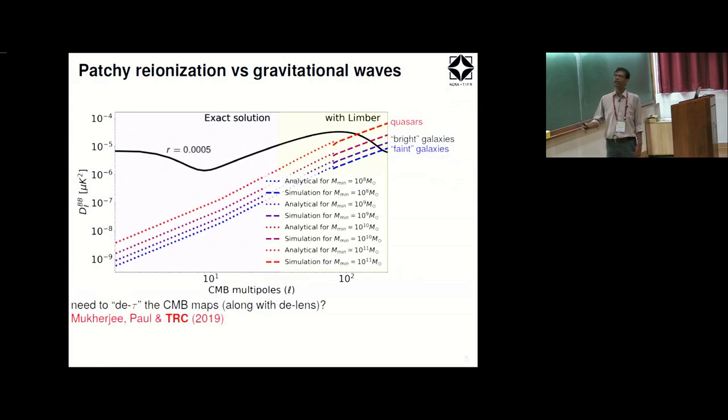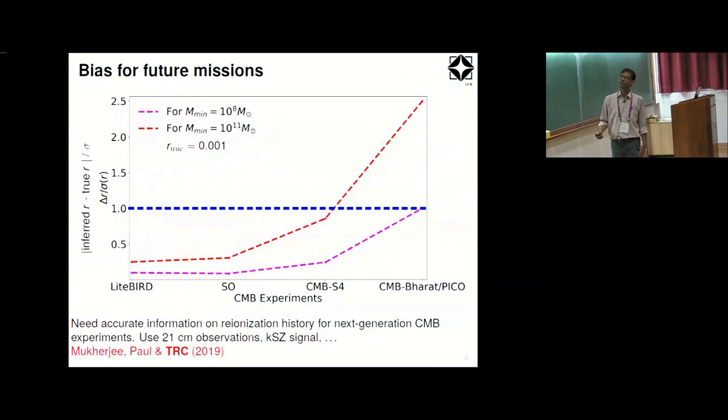But what you should also realize is that this optical depth along different lines of sight could be different because reionization is not a homogeneous process, it's patchy. So there's fluctuations in these white regions. That gives rise to a B-mode signal and that is something we have been trying to calculate. What we have come up with is a very self-consistent and detailed model of reionization. Given this uncertainty this is the kind of B-mode signal you expect from the reionization, this scattering of free electrons which is still much reasonably smaller than the primordial B-mode signal. But what can happen is if you want to calculate the bias it will incur in the measured or inferred value of the tensor to scalar ratio R, which is a probe of the primordial gravitational waves, normalized to the error in this parameter.